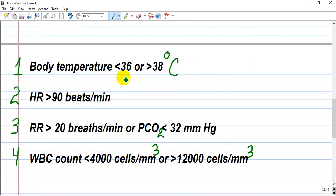Essentially, temperature is hypothermic less than 36 or hyperthermic like a fever more than 38 degrees Celsius, heart rate more than 90 beats per minute, respiratory rate more than 20 breaths per minute, or PCO2 less than 32 millimeters of mercury.